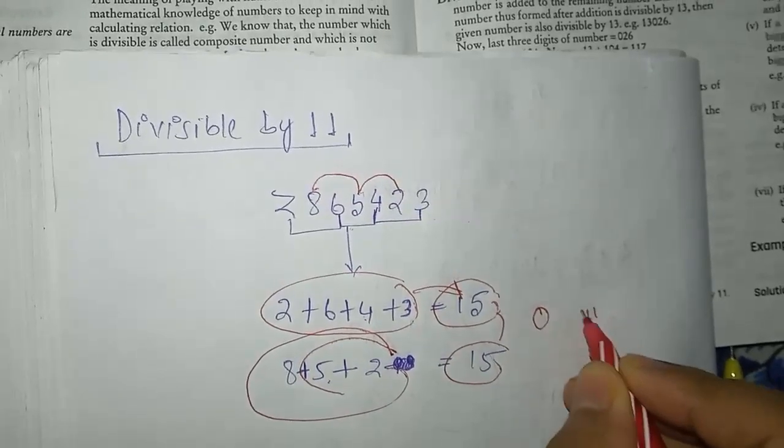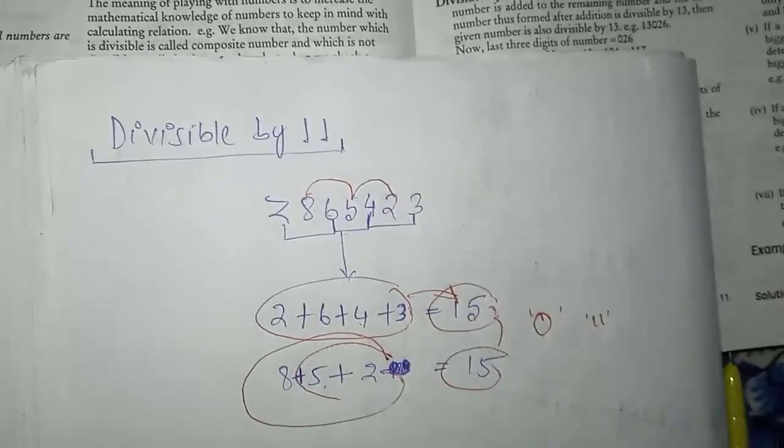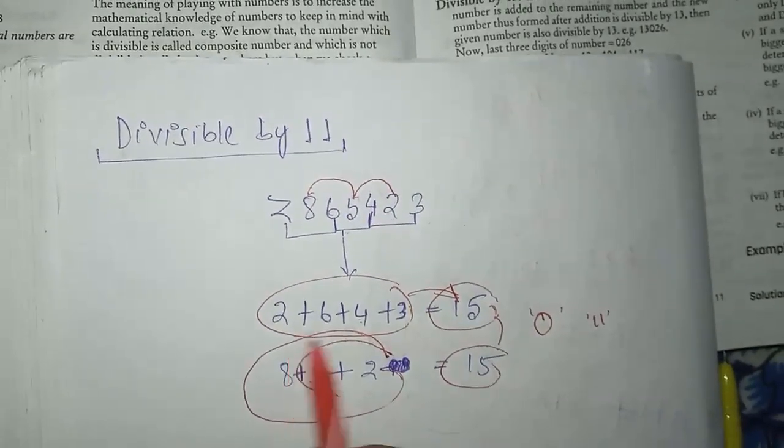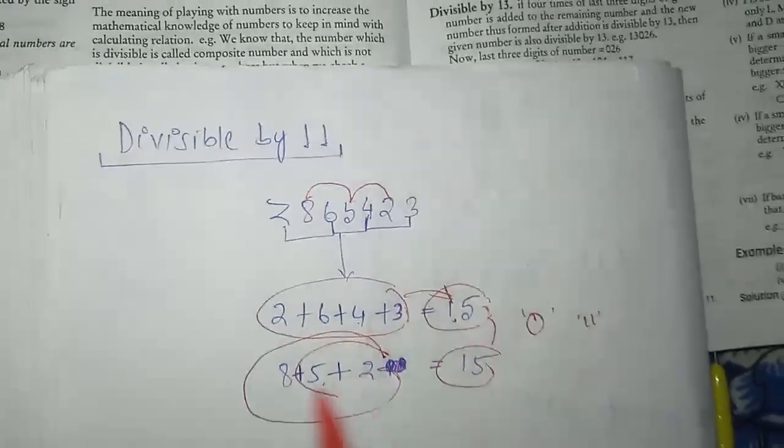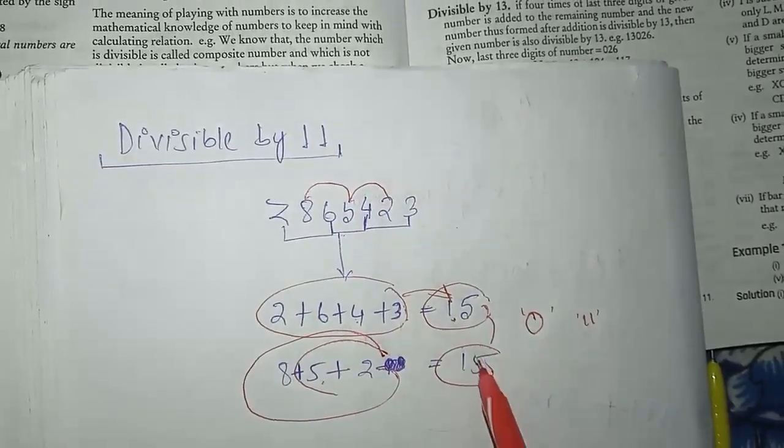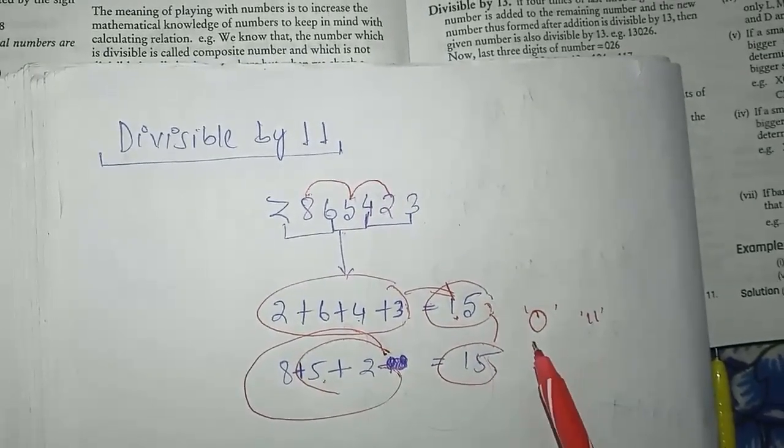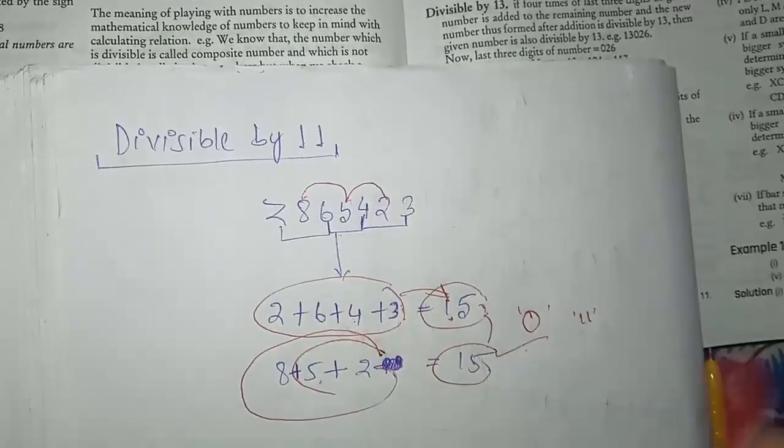So if the number is divisible by 11, you should take the difference of the alternate numbers. Let's divide this into parts. Is it clear?